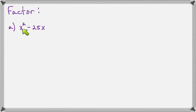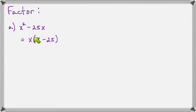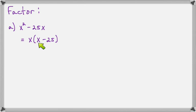Let's factor x² minus 25x. There's a common factor of x, so factoring that out leaves x(x minus 25). Inside the parentheses, is this a difference of squares? No, because 25x is not a squared term. Is it a difference or sum of cubes? Certainly not, because neither term is a cube. So there's nothing else we can do; this one is done.